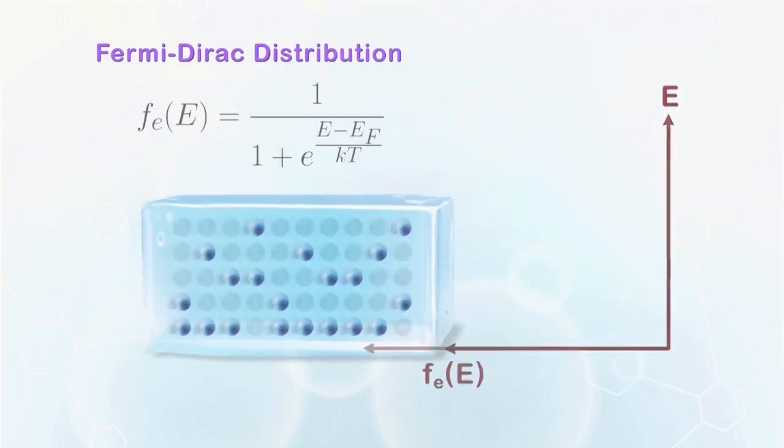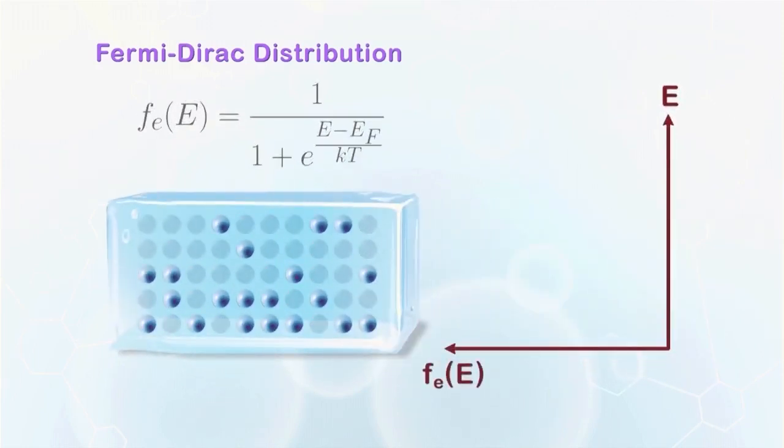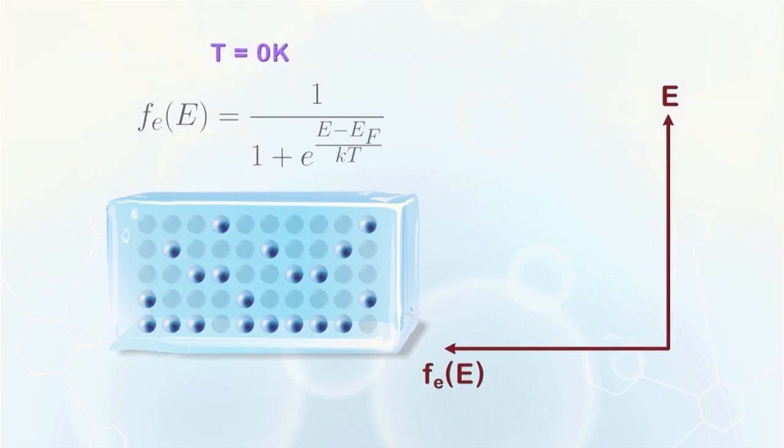Let's spend some time to study the behavior of the Fermi-Dirac function. For example, at absolute zero temperature, all the electrons stay at the lowest energy state. So, below a certain energy that we refer to as the Fermi level, all the states are filled.